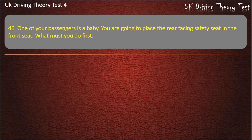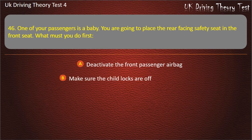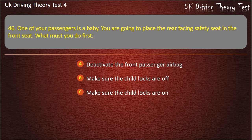Question 46. One of your passengers is a baby. You are going to place a rear-facing safety seat in the front seat. What must you do first? Deactivate the front passenger airbag; make sure the child locks are off; make sure the child locks are on; or deactivate all the airbags. Answer: Deactivate the front passenger airbag.